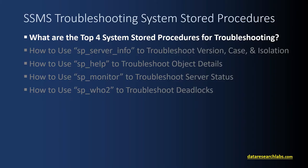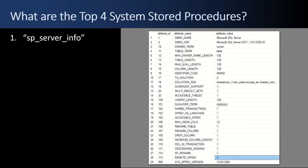First up, what are the top four system stored procedures for troubleshooting? Well, first up is SP_ServerInfo, and over to the right you see a dump of what it'll list out — a bunch of attribute names and values that are important for the server.